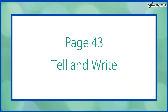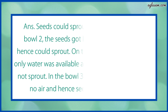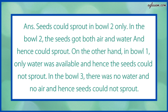Turn to page number 43. Tell and write. Question number 1 says: in which bowl did the seeds sprout? What difference did you see between this bowl and other bowls? The answer is: seeds could sprout in bowl 2 only. In bowl 2, the seed got both air and water and hence would sprout. On the other hand, in bowl 1, only water was available and hence the seeds could not sprout. In bowl 3, there was no water and no air, and hence the seed could not sprout.